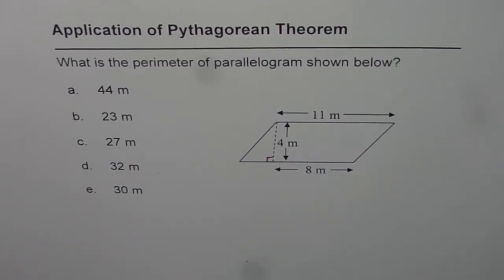Here is a multiple choice question on perimeter of a parallelogram and we will apply Pythagorean theorem to solve this. The question is, what is the perimeter of the parallelogram shown below? We are given five choices. I would like you to pause the video, do the calculation, select the answer, and then look into my solution.